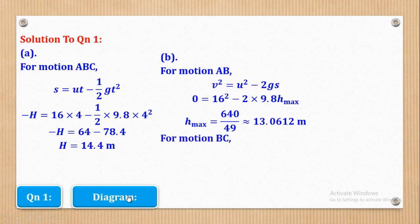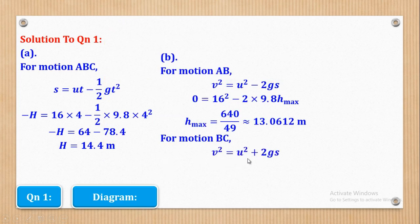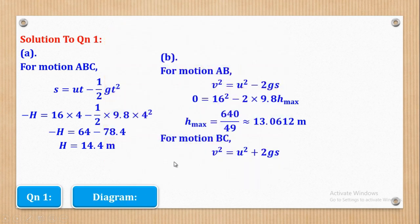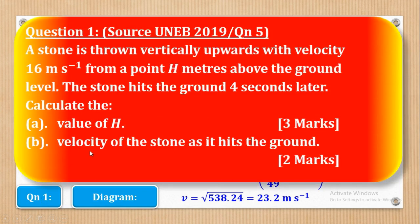Now that we have H max, for motion B to C we use the third equation again, but now it is plus because the stone is going downwards. The initial velocity is 0, G is 9.8, and the displacement is H max plus capital H. H max was 640 over 49, and capital H is 14.4. Making V the subject gives V equal to 23.2 meters per second.